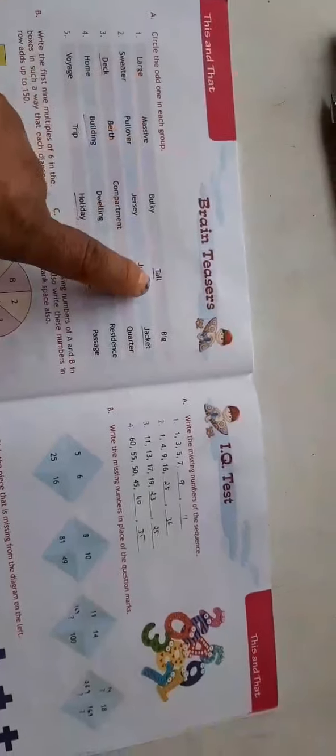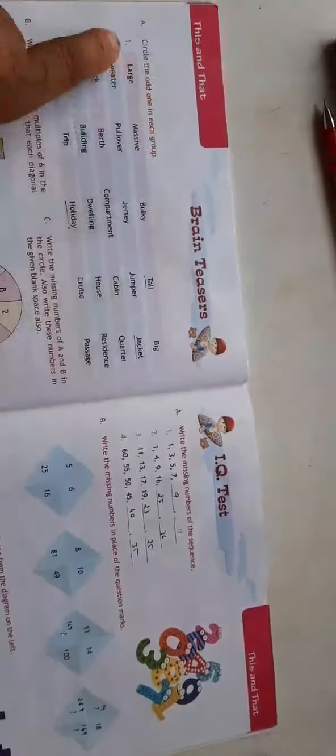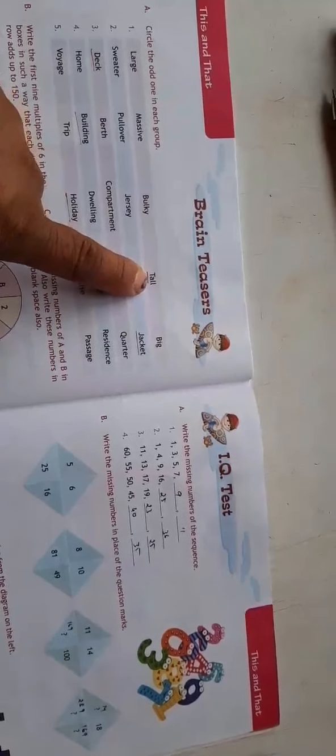You are supposed to circle the odd one here. Large, massive, bulky, big. They all are same but tall is different. So this is the odd one.